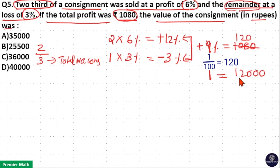Value of 1 unit consignment is 12,000. We need to find out the value of 3 unit consignment. This is the total number of consignment. So, 3 unit value is equal to 12,000 into 3, that is 36,000. Option C is your answer.